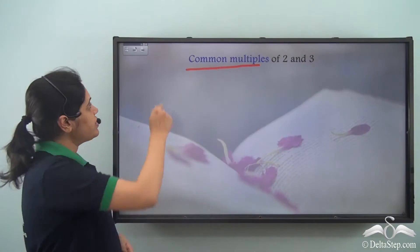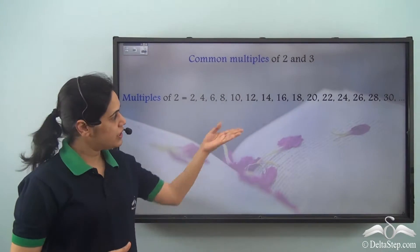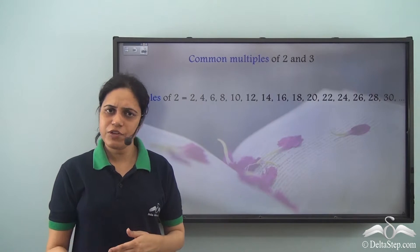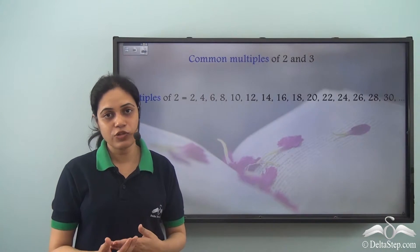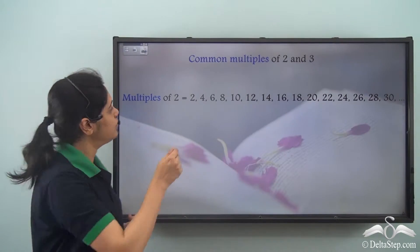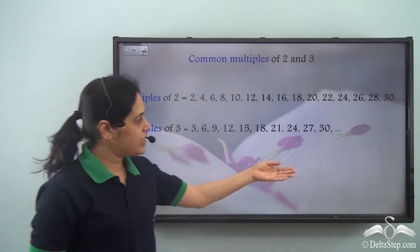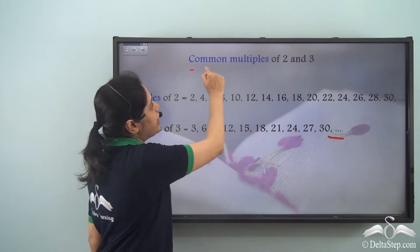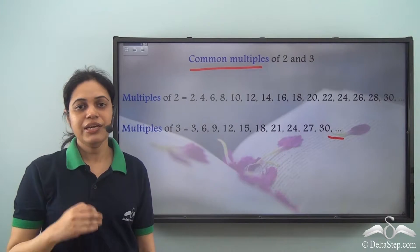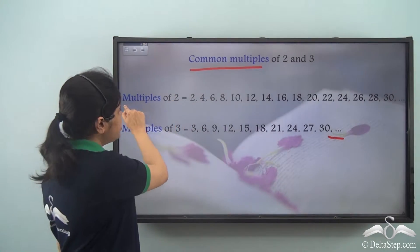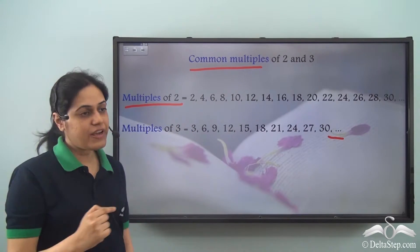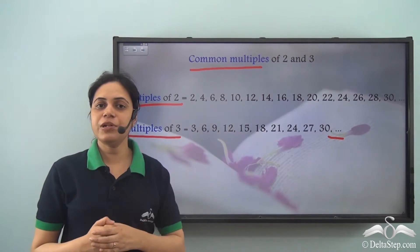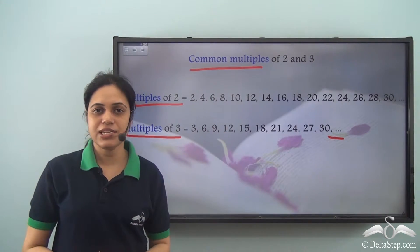Let's see what we mean. First let us write down all the multiples of 2. The dots indicate that they are endless — multiples of a number are uncountable, they always go on and on. These are the multiples of 3, and once again they are endless. Now what I need to find is the common multiples of 2 and 3 — that is, the numbers which are in the list of multiples of 2 as well as in the list of multiples of 3.